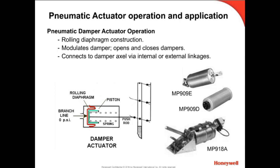The push rod is attached to the damper drive blades via a linkage assembly. The damper motor may be mounted internally or externally to the duct, and the linkage will involve push rods, pivot arms, and ball joints to meet mounting and movement requirements.